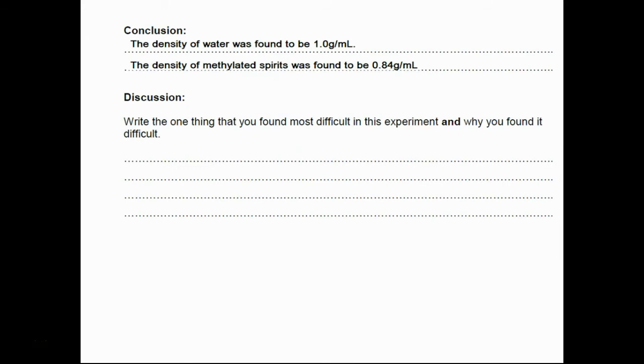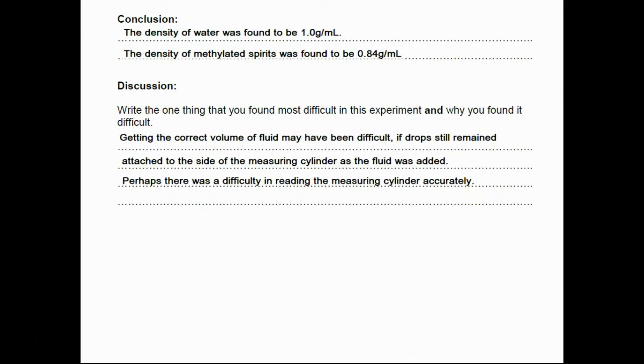Now we can write a conclusion. Now our conclusion should answer our aim, which was to find the density of these two liquids. And this is what we have found. Then we can put in the discussion. Now often the discussion goes in before the conclusion. So here is a point which might be raised. What was difficult in carrying out this experiment? Well, perhaps getting the correct volume of the fluids might have been difficult. For example, if a drop still remained attached to the side of the measuring cylinder as the fluid was added. Or perhaps there was a difficulty in reading, getting an accurate measure of the liquid in the cylinder.